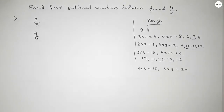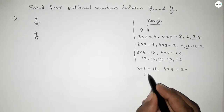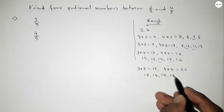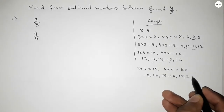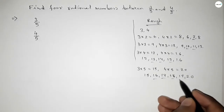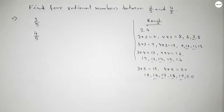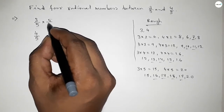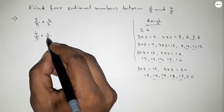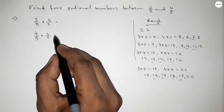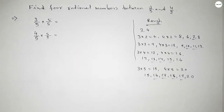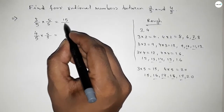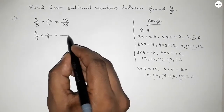So finally, if we multiply 3 by 5 we get 15, and 4 by 5 we get 20. Between 15 and 20 we can get 4 natural numbers. So we should multiply 3 over 5 and 4 over 5 — both numerator and denominator — by 5. This gives us 15 over 25.